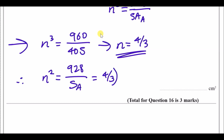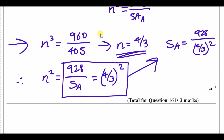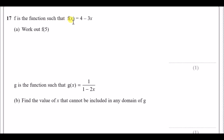Solving for the surface area of A: multiply SA across and divide by (4/3)², giving surface area of A = 928 / (4/3)². Put this in the calculator and you get 522.